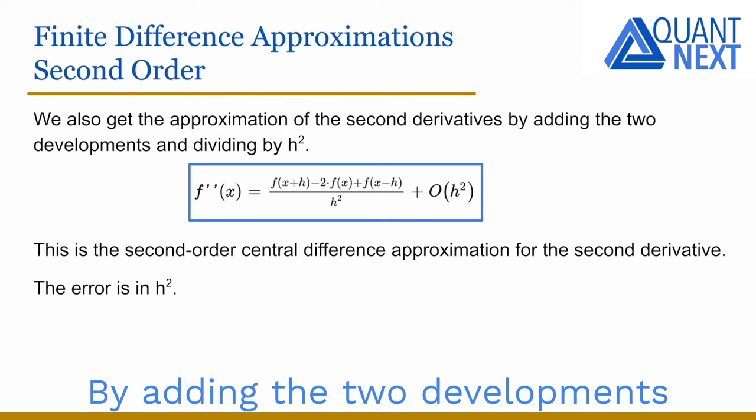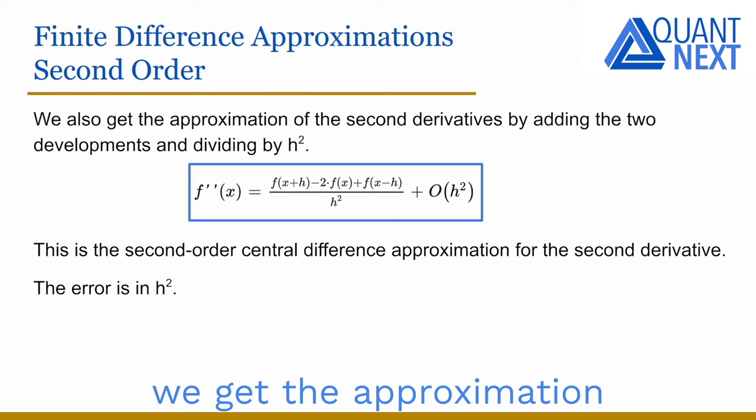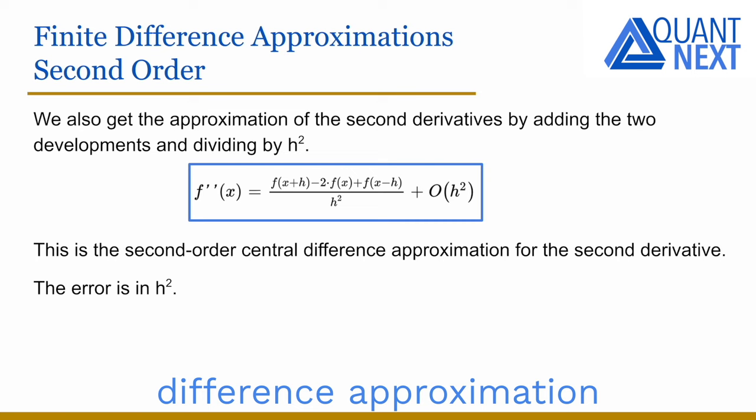By adding the two Taylor developments and dividing by h², we get the approximation of the second derivative. It is a second order central difference approximation with an error in h².